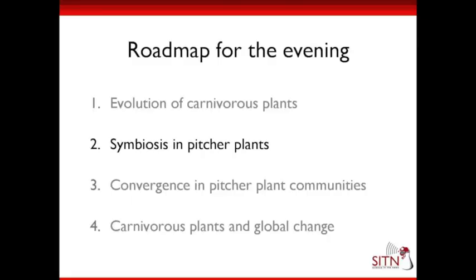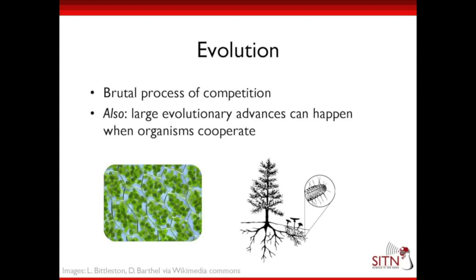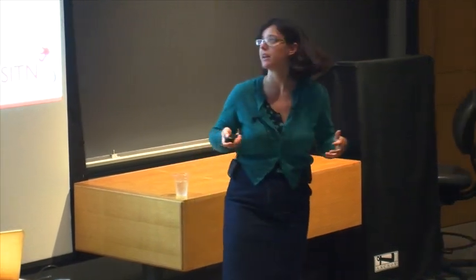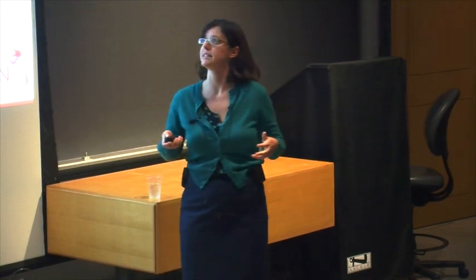We're going to move on to the second section: symbiosis in pitcher plants. When you think of evolution, you may think of it as a brutal process of competition — survival of the fittest, organisms fighting and killing each other to get resources. But there are other ways that evolution can happen, and large evolutionary advances can occur when organisms cooperate with each other — when things with different skills come together and make something new.